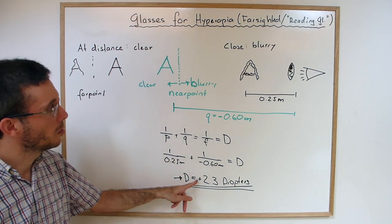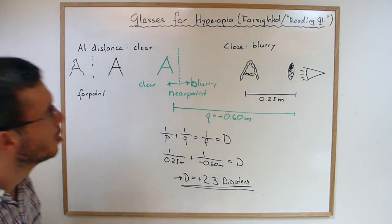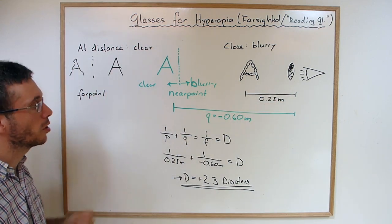What does the plus mean? The plus means they actually need a converging lens. So reading glasses are converging lenses.